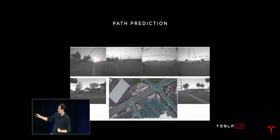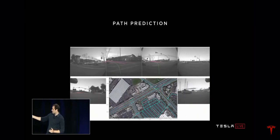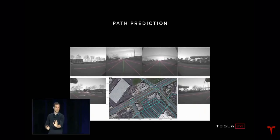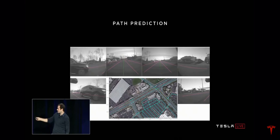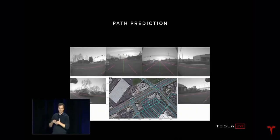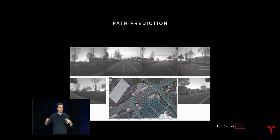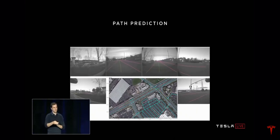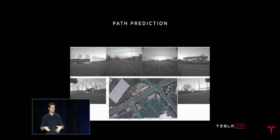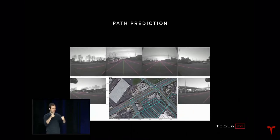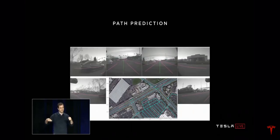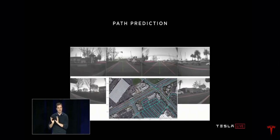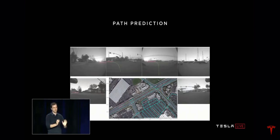What we're looking at here is some person in the fleet who took a left through an intersection. We have the full video of all the cameras, and we know the path that this person took because of the GPS, the inertial measurement unit, the wheel angle, and the wheel ticks. We put all that together and we understand the path this person took through this environment.